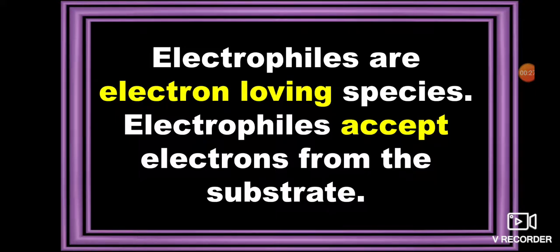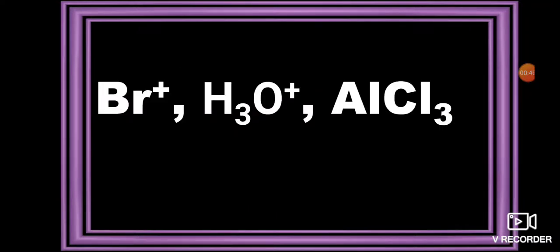Electrophiles are electron-loving species. They accept electrons from the substrate and have an attraction for electrons. Electrophiles are generally positively charged or neutral species. For example: Br+, H3O+, or neutral species like AlCl3.